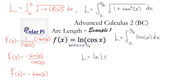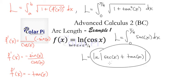This is the antiderivative of secant x, so we want to evaluate this at 0 and pi over 4.